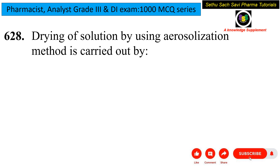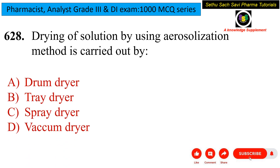Next question: drying of a solution by using the aerosolization method is carried out by which dryer — drum dryer, tray dryer, spray dryer, or vacuum dryer? Drum dryers use a rotational/kinetic method without aerosolization. Tray dryers use a stacking process. Vacuum dryers remove air from the surface. Spray dryers spray the sample using aerosolization. The answer is spray dryer.